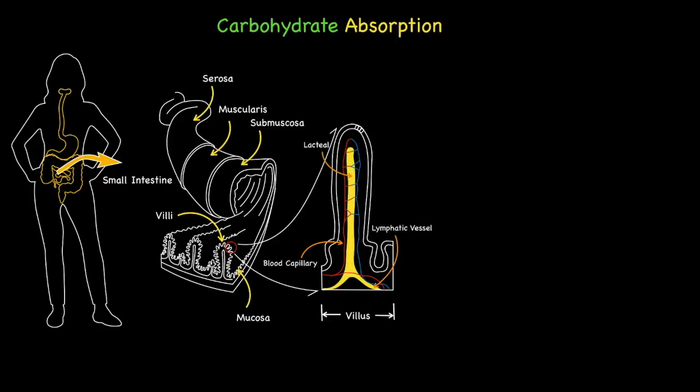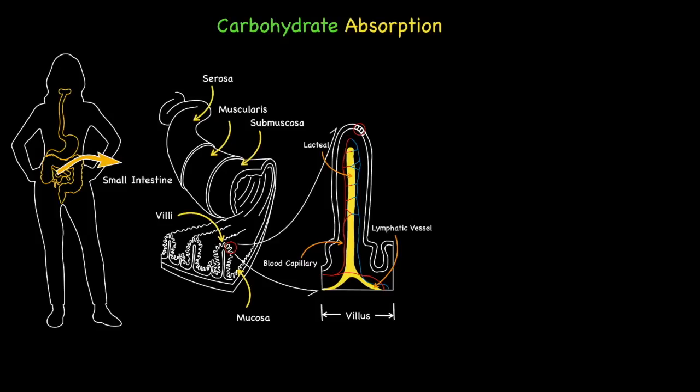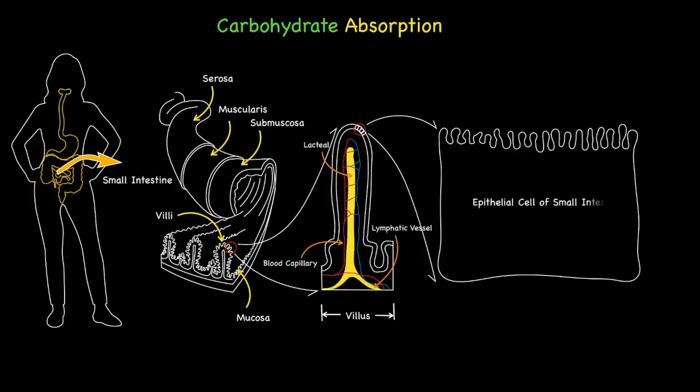At the top of the villus, I have circled a number of cells that make up the epithelial layer and lining of the small intestine. These cells are known as enterocytes. Here is an illustration of such a cell. On one side of this cell, and more specifically, the side that faces the inside of the small intestine, you will notice a brush-like border. This represents the microvilli, which is where absorption of food occurs.